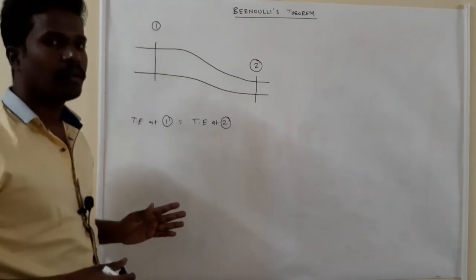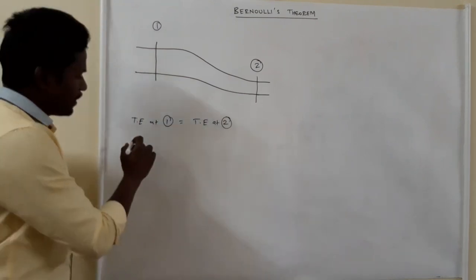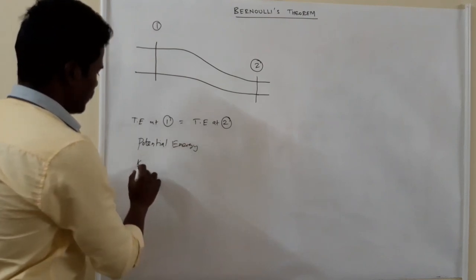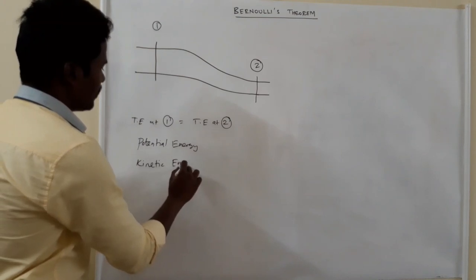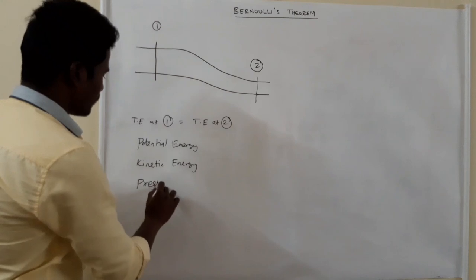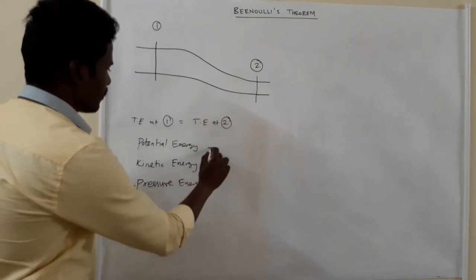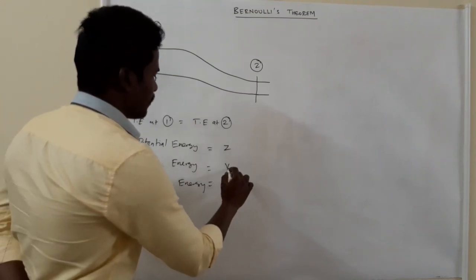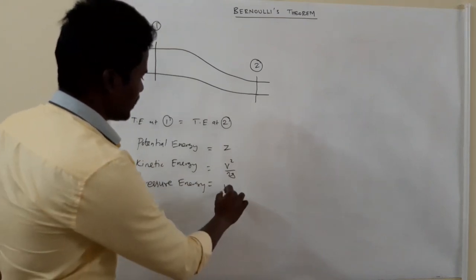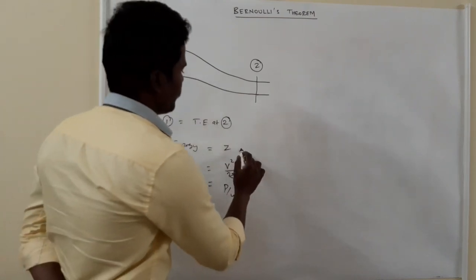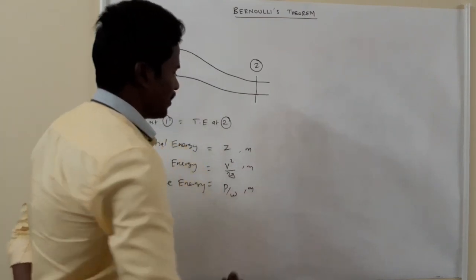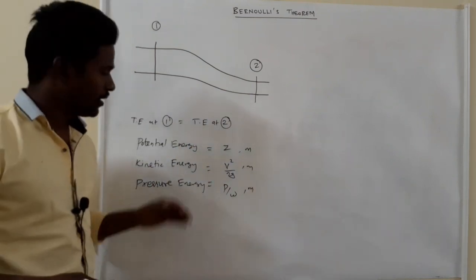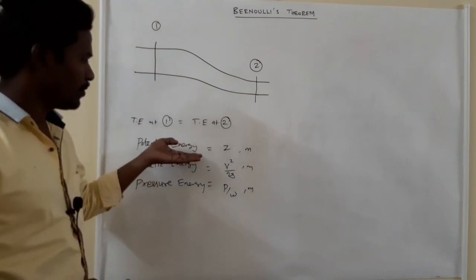In a fluid flow, what is the energy there? There are three kinds of energy. One: potential energy. Two: kinetic energy. Three: pressure energy. The sum of these three energies is called total energy. Potential energy is denoted Z, kinetic energy is V squared by 2G, and pressure energy is P by W — all in units of meters.